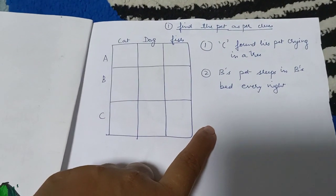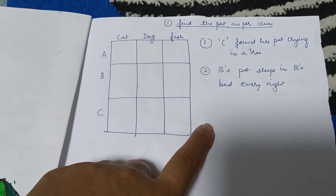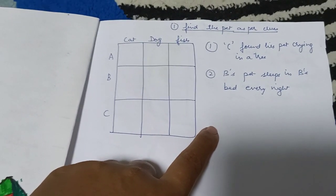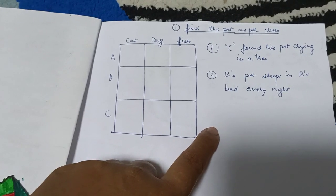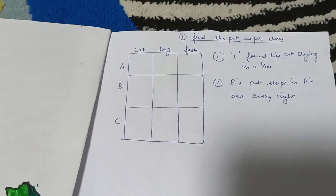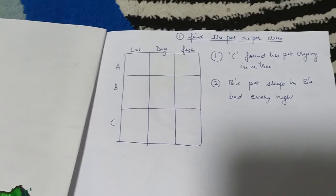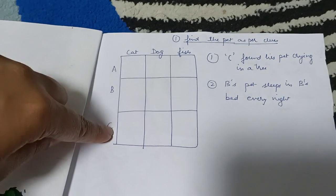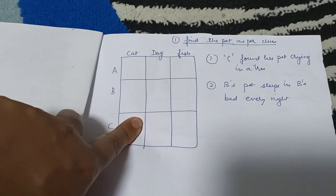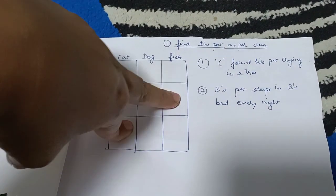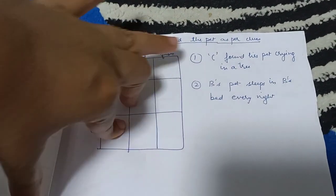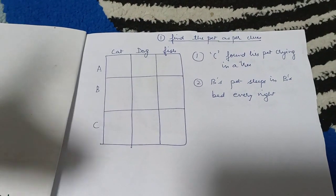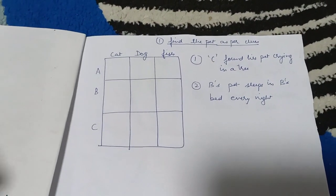But B's pet sleeps in B's bed every night. So who sleeps in your bed? It can be a cat or it can be a dog. So dog does not climb up the tree but cat does. So basically C's pet was cat, B's pet will be dog, and A's pet is left to be fish. So she has to infer this information from the clues.